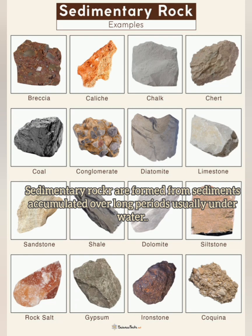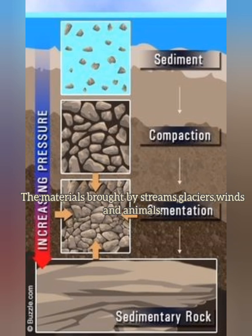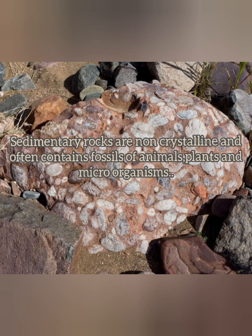Sedimentary rocks are formed from sediments which are accumulated over long periods, usually under water. They are layered and stratified rocks; the strata may vary in thickness from a few inches to many feet. Sediments get accumulated by different agents of erosion, then compaction takes place because of great force and tension, resulting in sedimentary rocks. They are non-crystalline and contain fossils of animals, plants, and other microorganisms accumulated over thousands of years.